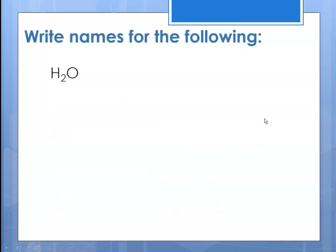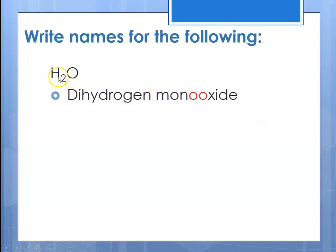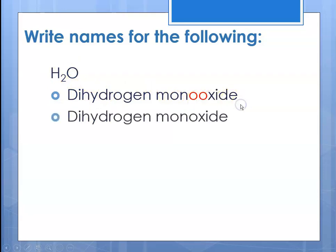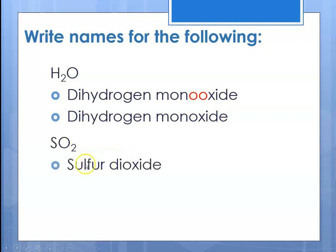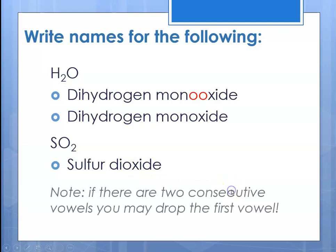Here is a familiar compound — water — but let's talk about its systematic name. There are two hydrogens, so 'dihydrogen,' and there's only one oxygen, so 'monoxide.' We could write that as dihydrogen monoxide, dropping one of those O's where the vowels meet. And for SO2, there's only one sulfur so that's just 'sulfur,' then 'di' because there are two, 'ox' for oxygen, 'ide' because it's binary — sulfur dioxide. Again, if there are two consecutive vowels, you are always allowed to drop that first vowel.